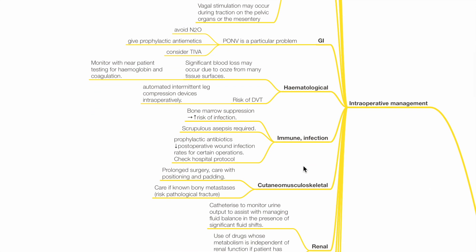Hematology. Significant blood loss may occur due to oozing from many tissue surfaces. Monitor with near-patient testing for hemoglobin and coagulation. Risk of deep vein thrombosis is addressed by automated intermittent leg compression devices intraoperatively.